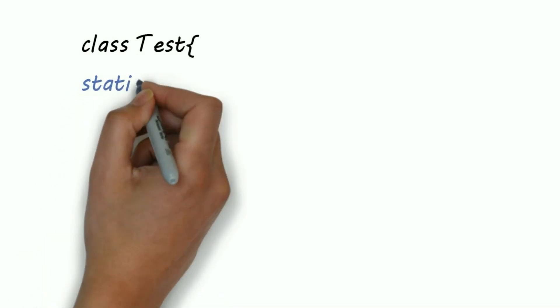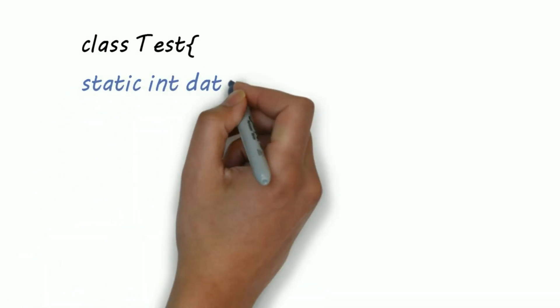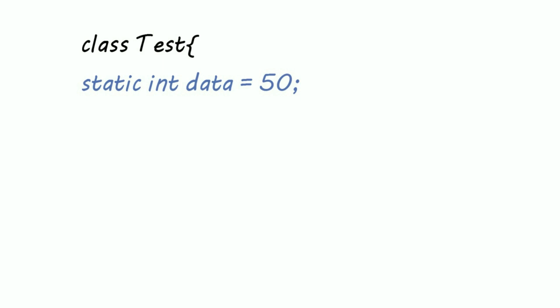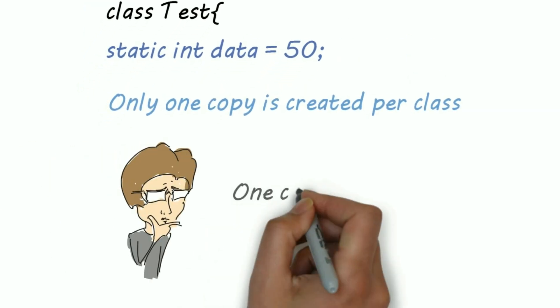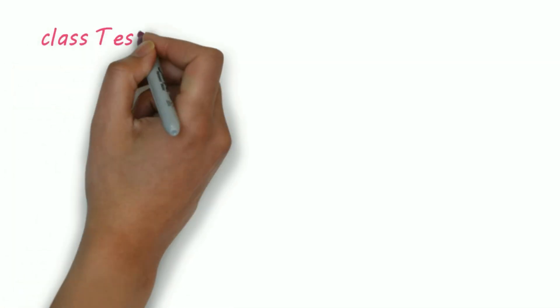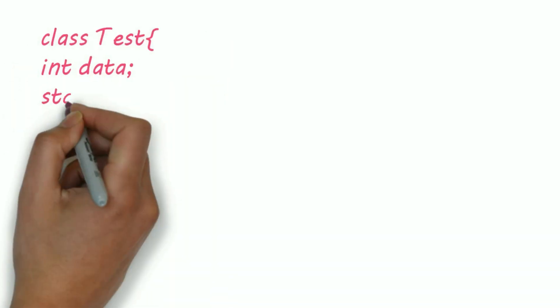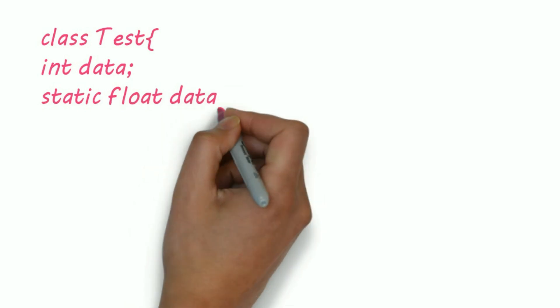For example, static int data. Only one copy is created per class. What do you mean by only one copy? Suppose we created a class test with one instance and one static variable.